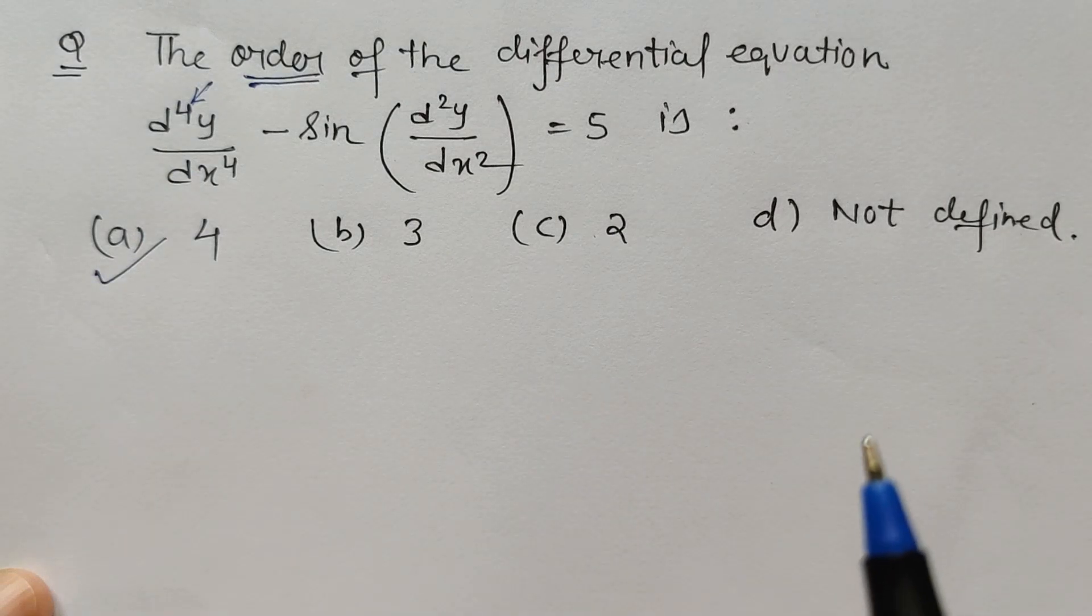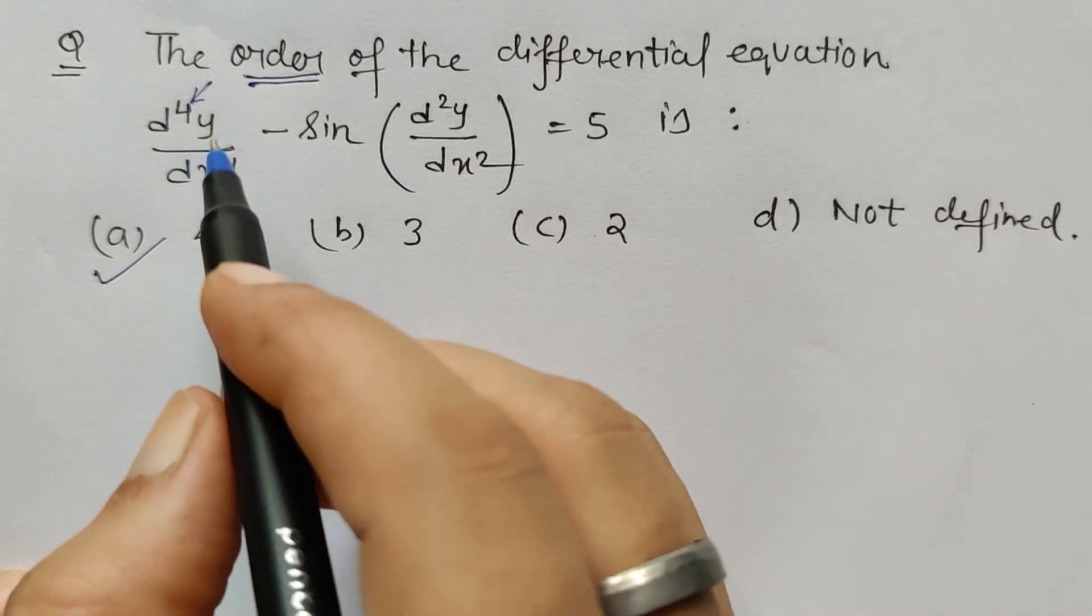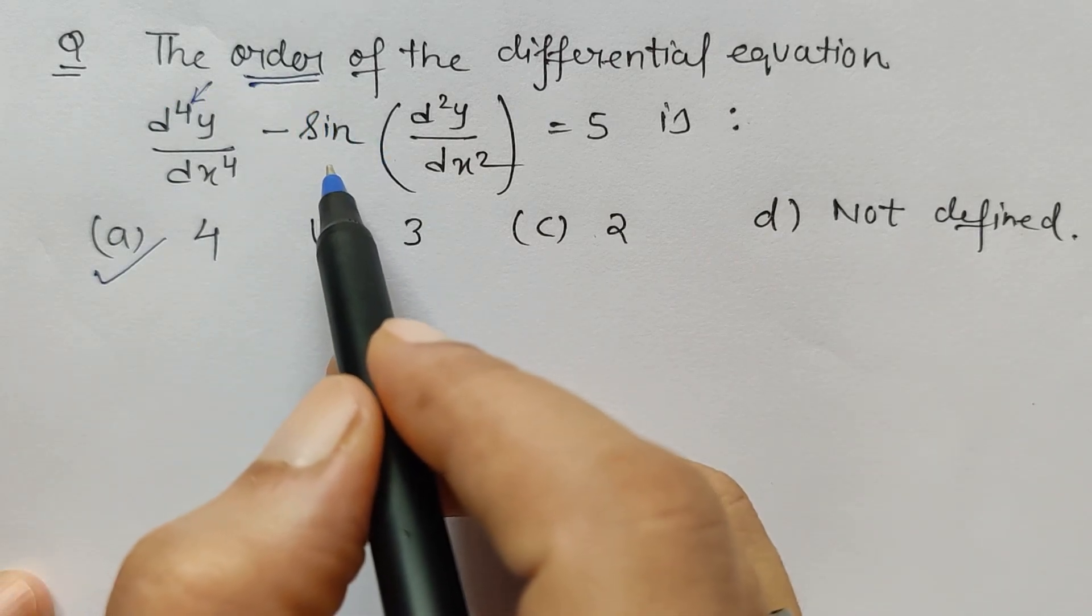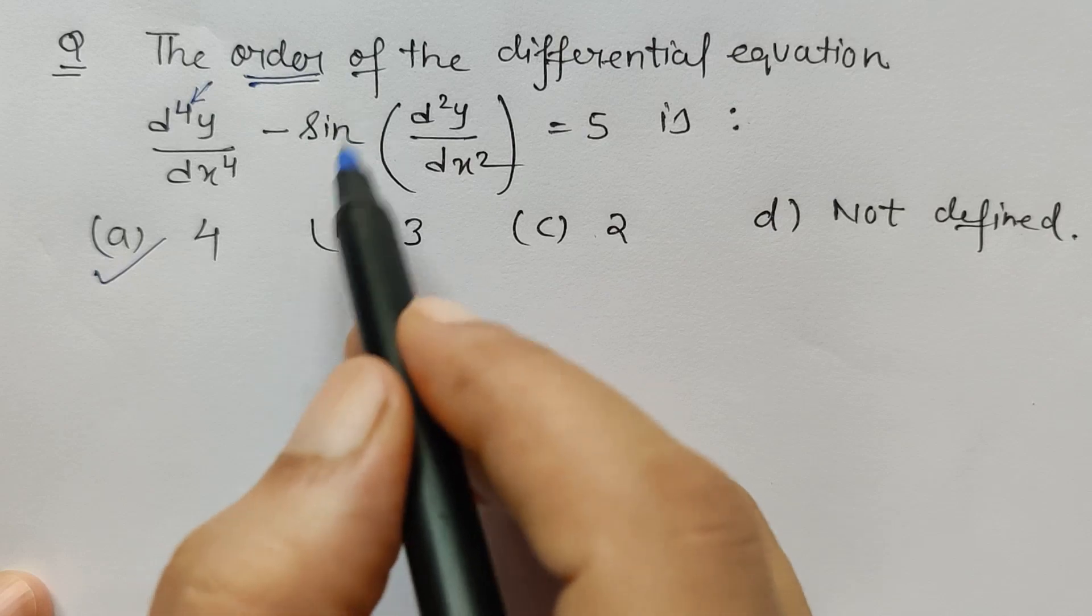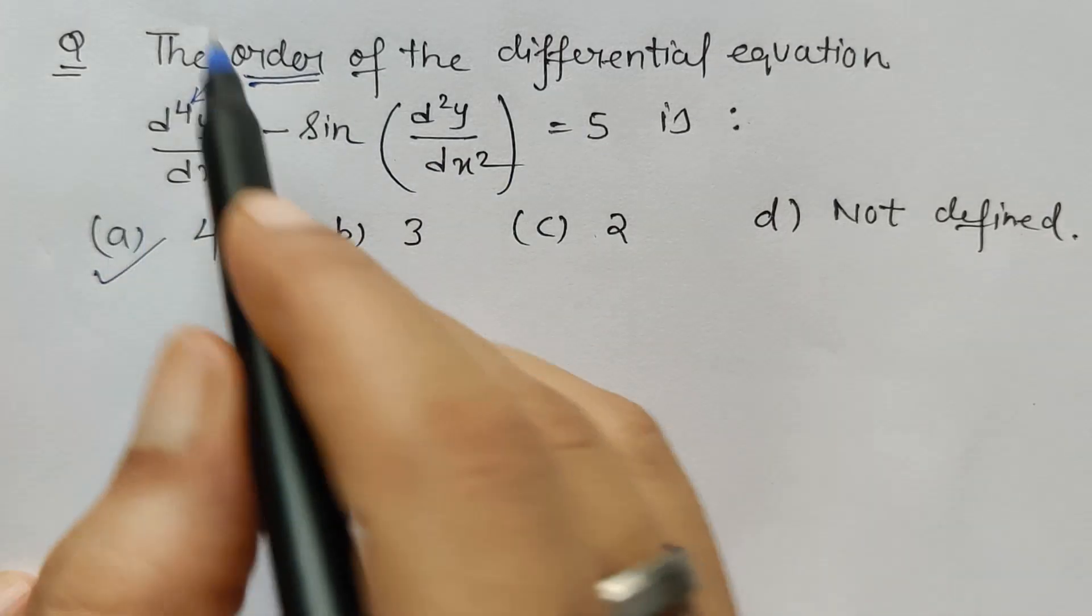So here I can see this is the fourth time differentiation. So the highest order derivative here is 4. So the answer is 4, but whatever power it would have had, and if there is no such sine function,